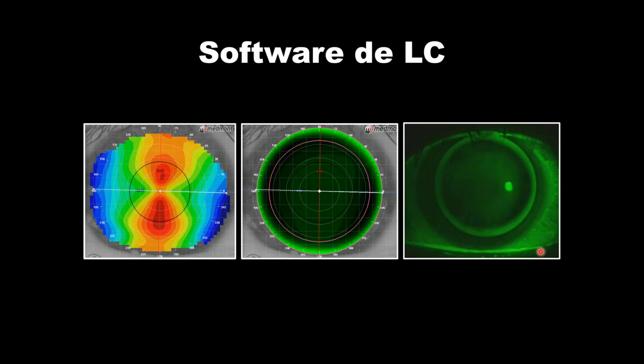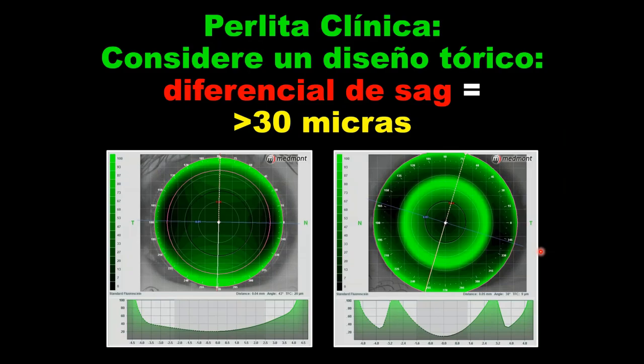When the Medmont tells me that the sagittal differential is 30 microns or greater, that's when I'm thinking I need a toric lens — whether for a corneal GP or an orthokeratology lens.